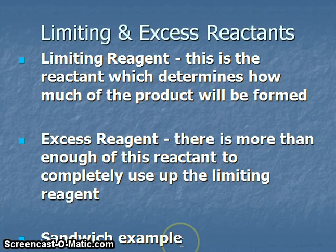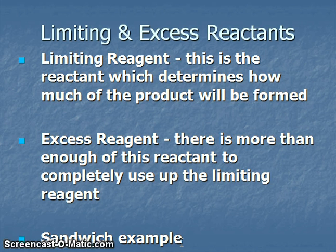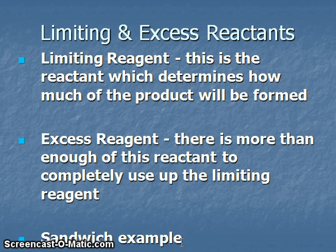Let's use an example of making sandwiches to explain limiting and excess reactants. To make a sandwich, we need two slices of bread and one slice of lunch meat. In scenario one: I have 16 slices of bread and 4 slices of lunch meat. I can only make four sandwiches because I'm limited by the lunch meat — it doesn't matter that I had 16 slices of bread. In scenario two: I have 10 slices of bread and 6 slices of lunch meat. Because I only have 10 slices of bread, I can only make five sandwiches. The bread would be the limiting reactant; the lunch meat would be the excess reactant.